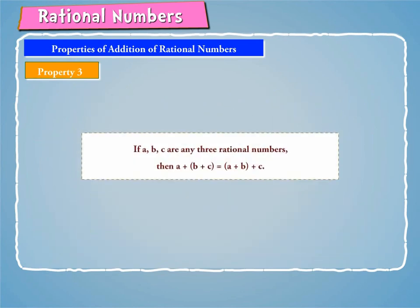Thus, if A, B, C are any three rational numbers, then A + (B + C) is equal to (A + B) + C.